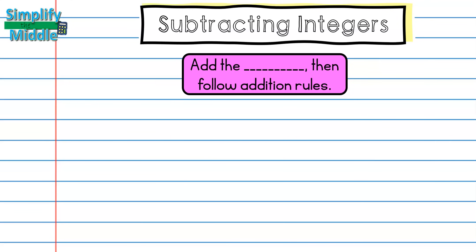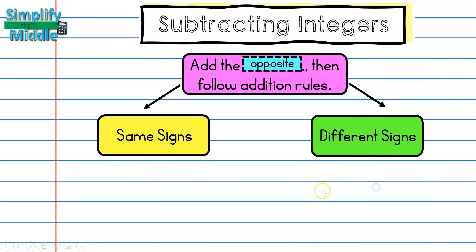Our rules for subtracting integers are to add the opposite and then follow the addition rules that we learned about in the last lesson.